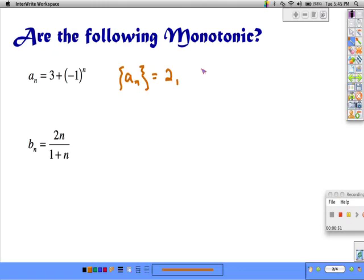3 plus negative 1 squared or 4 and it just goes back and forth like this up down up down, so this is not monotonic.